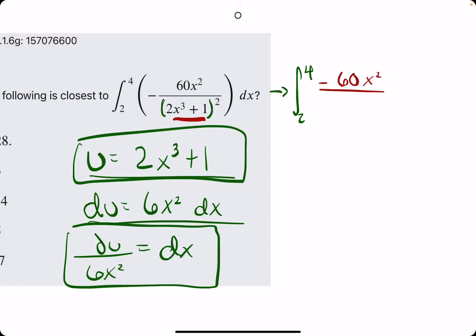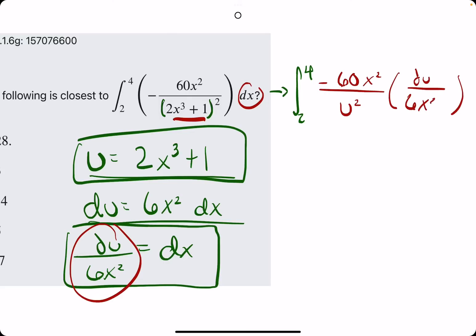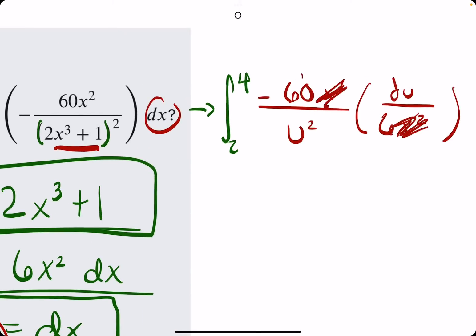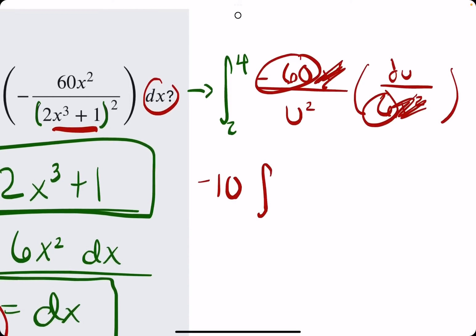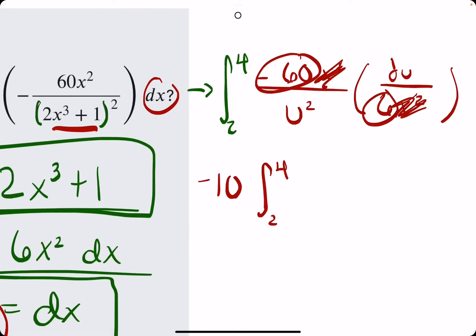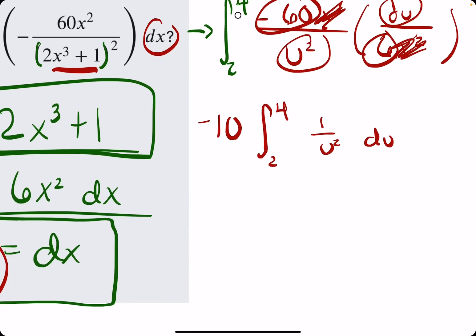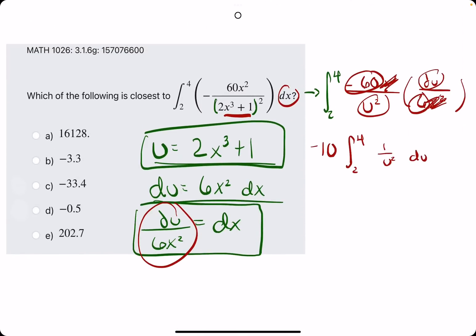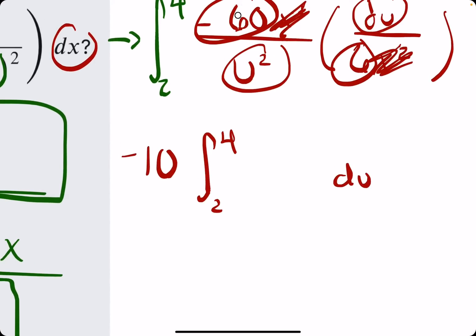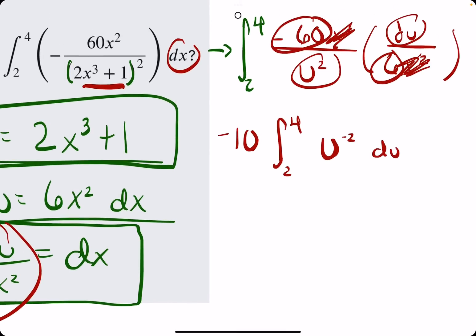We have negative 60 times x squared all over u squared, and then dx becomes du over 6x squared. Conveniently, because we've done this correctly, the x squareds cancel out. We gather our coefficients: negative 60 divided by 6 is negative 10. We pull that outside the integral from 2 to 4. What's left is just du on top and u squared on the bottom — basically 1 over u squared du. It will help to rewrite 1 over u squared as u to the negative 2 when we find its antiderivative.